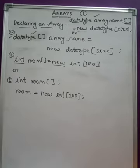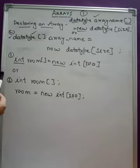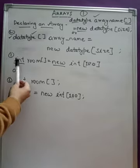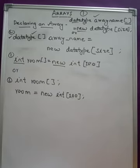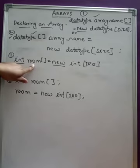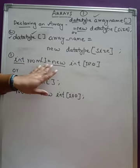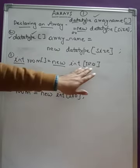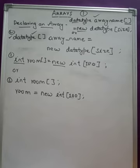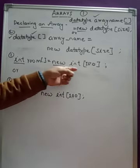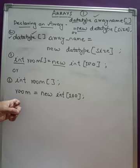Let's take an example. To declare an array of integer data type, we write int, followed by the array name, followed by square brackets, equals new int, and then 100 as the size. This means 100 values can be stored in this array.